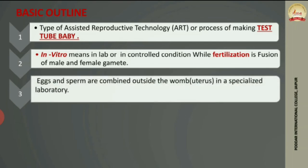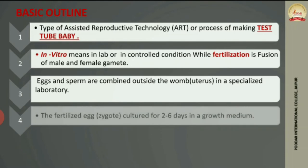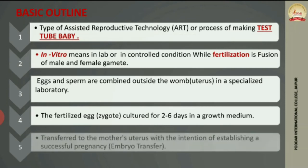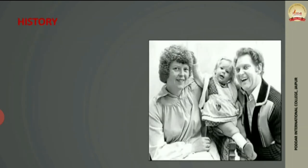In IVF, eggs and sperm are combined in a special lab. The resulting zygote is kept in an artificial medium for 2 to 6 days, after which it is transferred to the mother's uterus — either the biological mother or a surrogate mother. This transfer process is called embryo transfer.